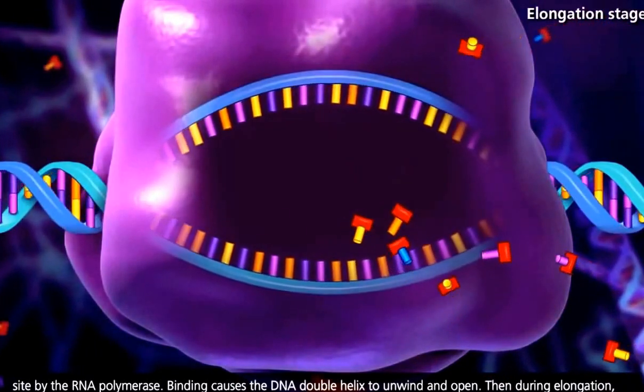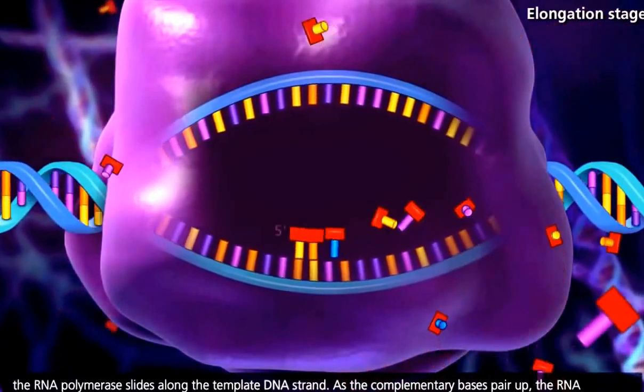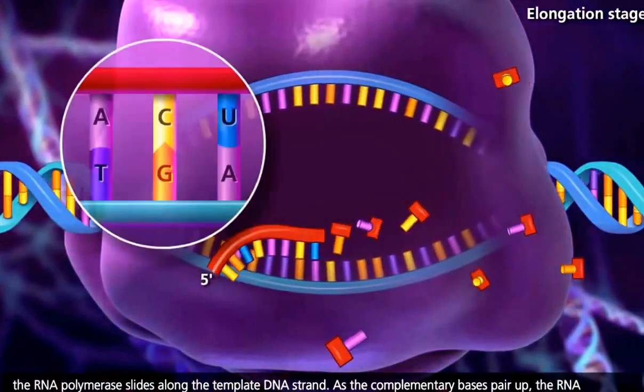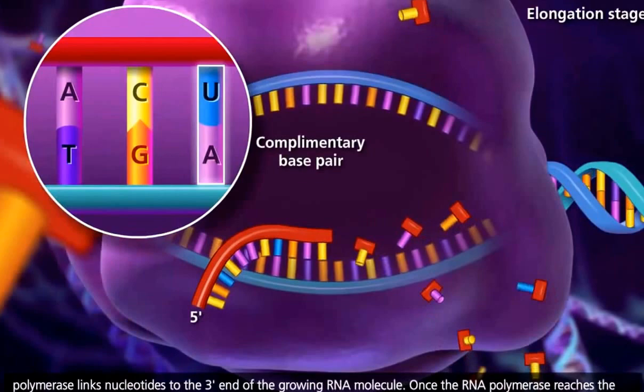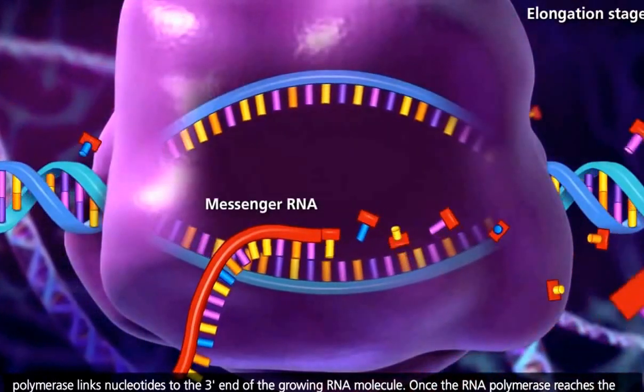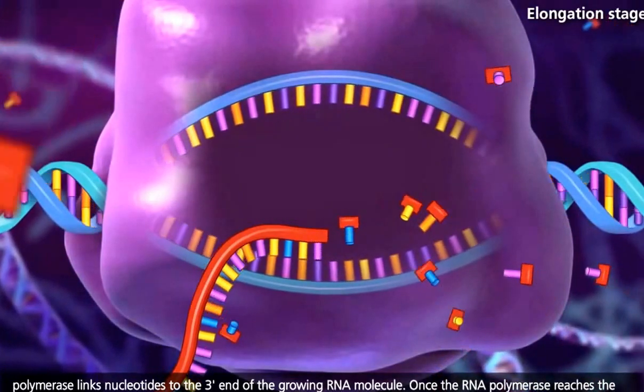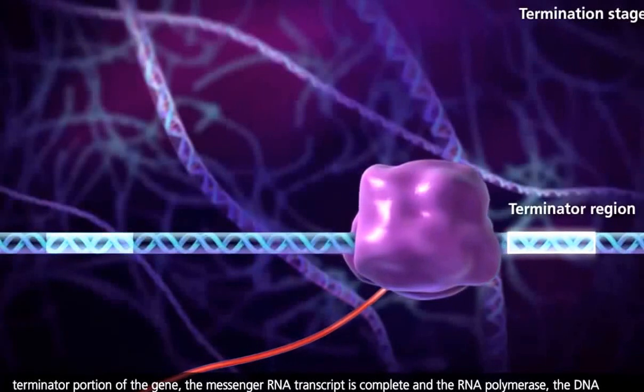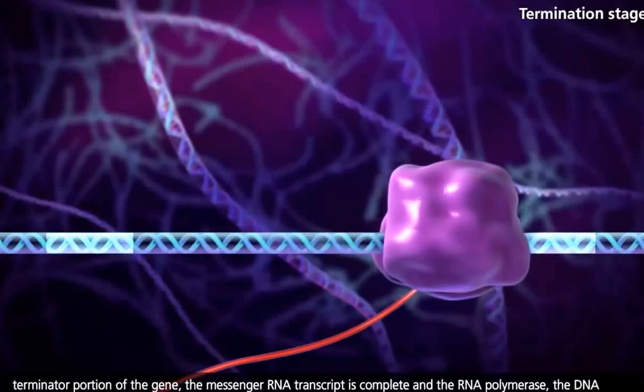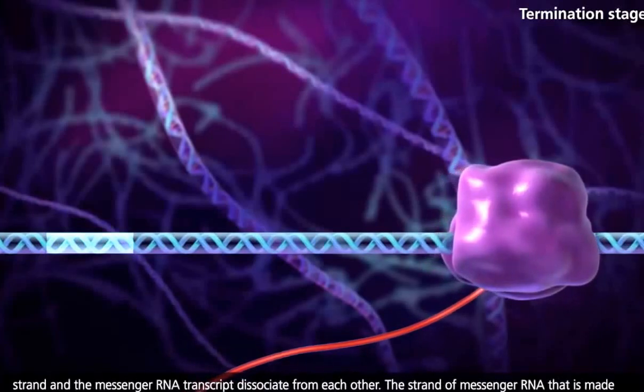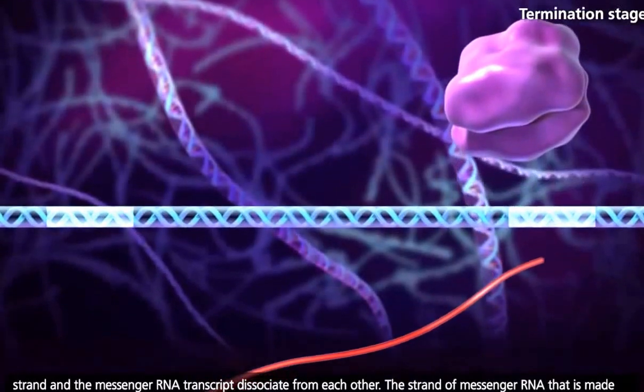Then during elongation, the RNA polymerase slides along the template DNA strand. As the complementary bases pair up, the RNA polymerase links nucleotides to the three-prime end of the growing RNA molecule. Once the RNA polymerase reaches the terminator portion of the gene, the messenger RNA transcript is complete, and the RNA polymerase, the DNA strand, and the messenger RNA transcript dissociate from each other.